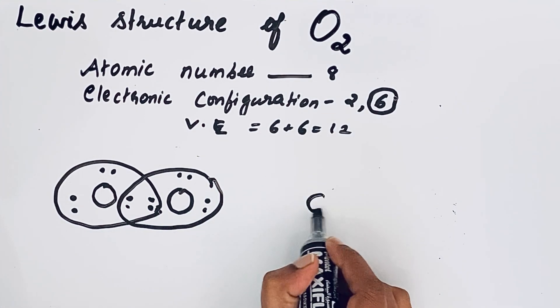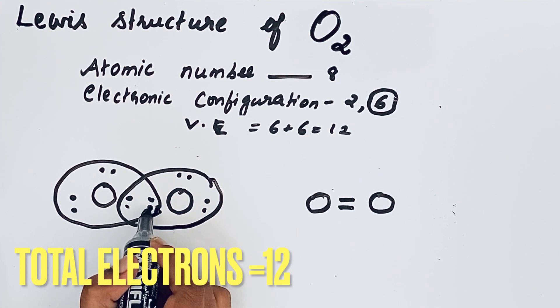The shared electrons can be shown in the form of lines. Draw a double line because two pairs of electrons are shared. We represent this as two lines. The remaining electrons are written as dots: 2 dots here, 2 dots here.